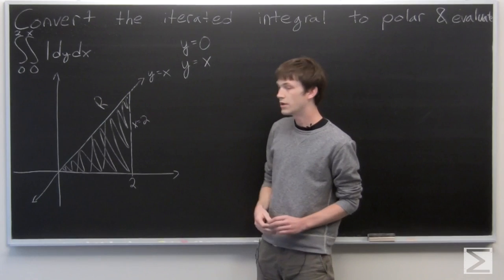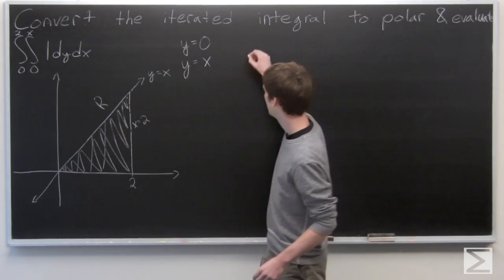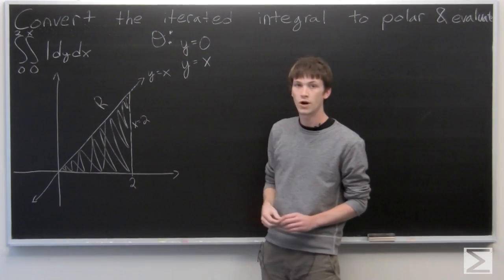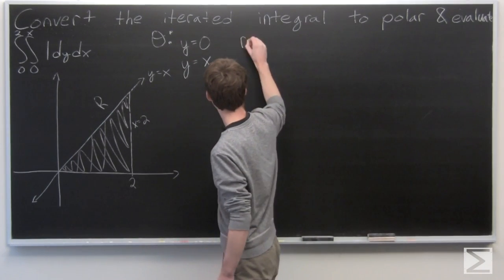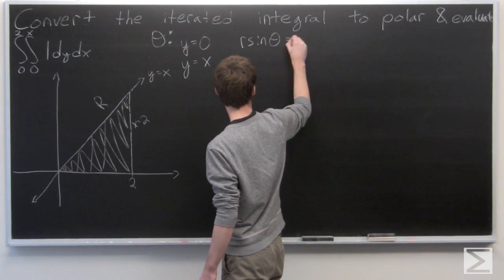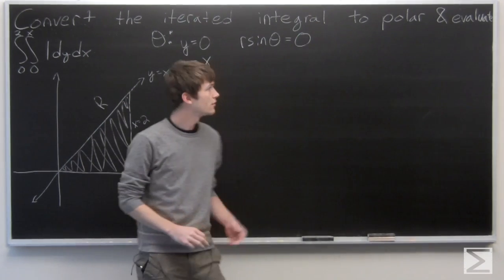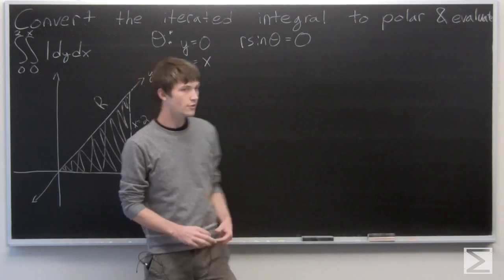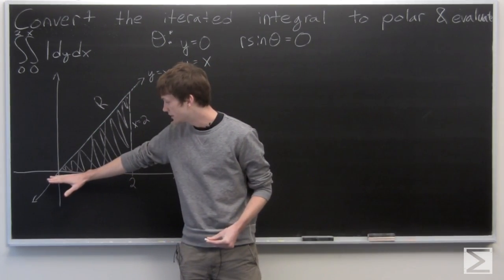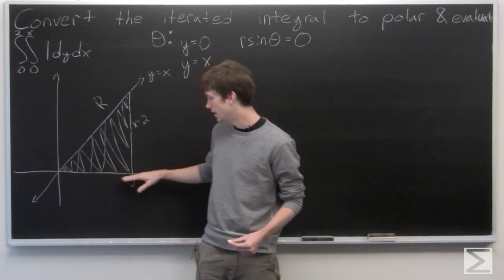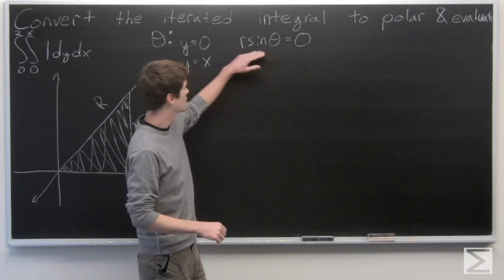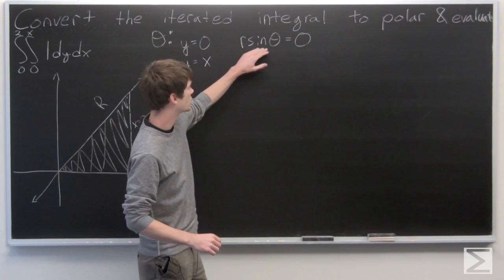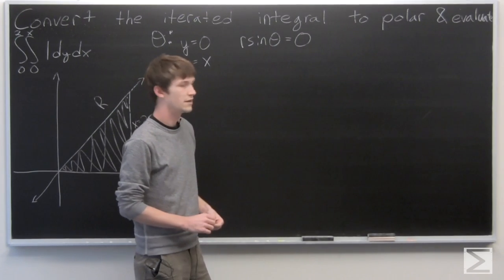We'll use polar coordinates to determine our theta. We know that y is equal to r sine of theta, and we want that when y is equal to 0. We want this to be true for all values of r along our x-axis between 0 and 2, so clearly we don't want r to just be equal to 0. We can divide by r and look at when sine of theta is equal to 0.